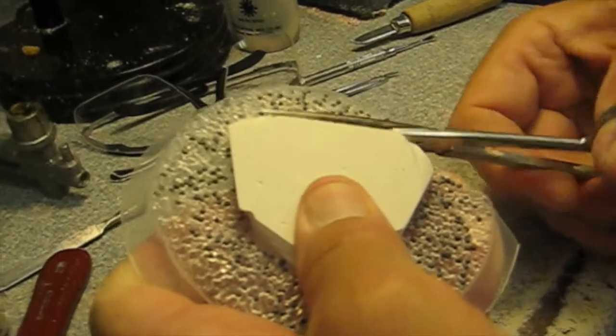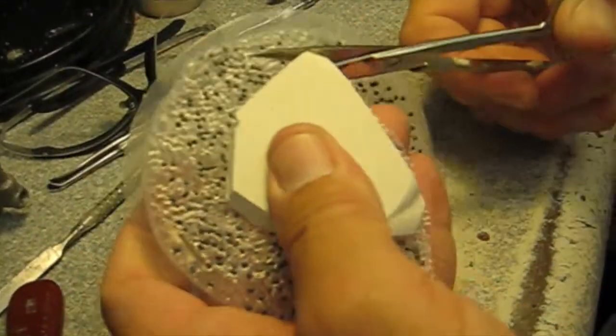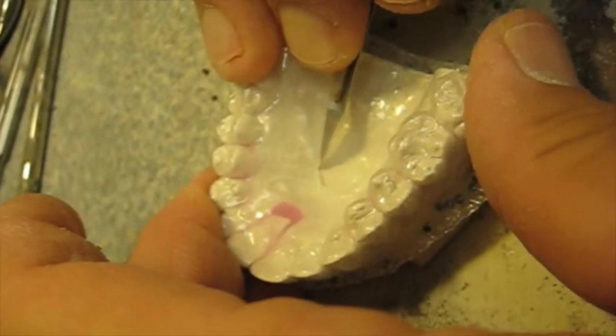Now all we have to do is cut around the plastic to get it off. Then we use a sharp knife to cut out the inside.